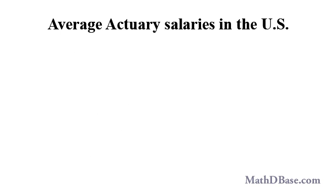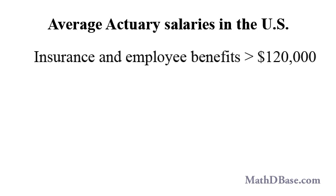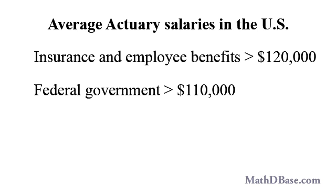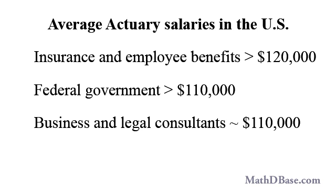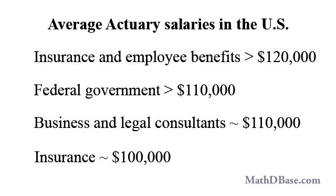In addition to experience, salaries of actuaries are determined by the type of industry as well as by geographical location. Actuaries who work with insurance and employee benefits average over $120,000, and those working for the federal government, over $110,000. Actuaries who consult to business and legal fields average near $110,000, and those in insurance fields, about $100,000 annually.